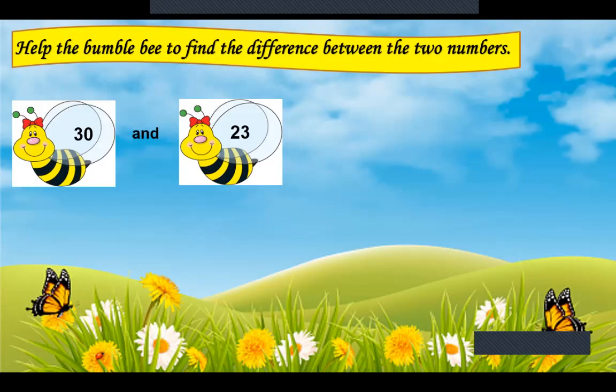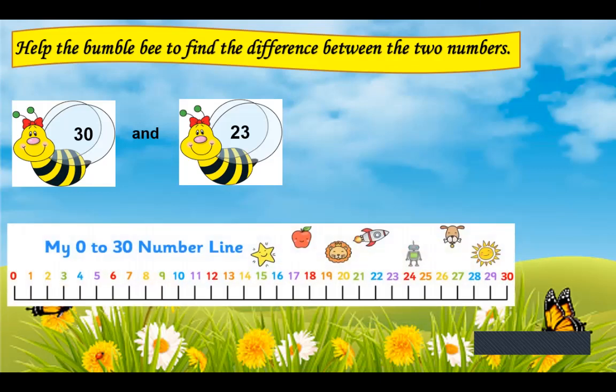Now help the bumblebee to find the difference between the two numbers: 30 and 23. Here children, you have to count back from 30 to 23. You can use both methods: counting on or counting back. Here we are using counting back.